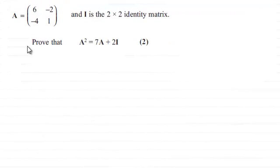Hi there. Now for this question, we're given this matrix A, which has the elements 6, -2, -4, 1. And I is the 2×2 identity matrix. We've got to prove that A² = 7A + 2I for two marks. So if you'd like to have a go at this, I'll give you a moment to pause the video.